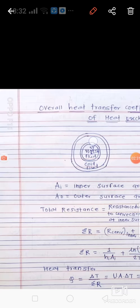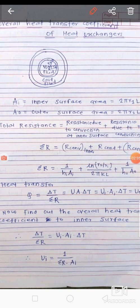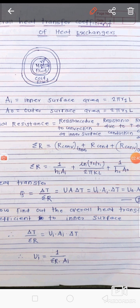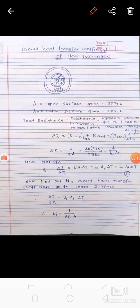The inner surface area, Ai, of the hot fluid pipe is 2πr1L. The outer surface area, Ao, of the central pipe is 2πr2L, where L is the length of the pipe.